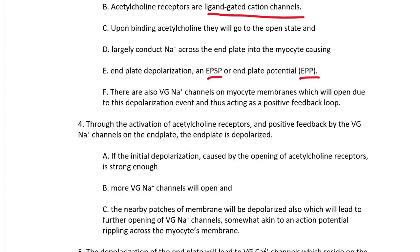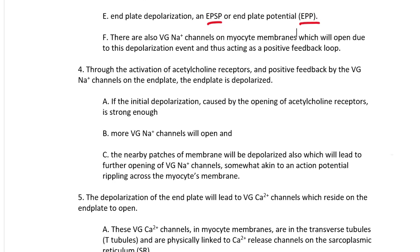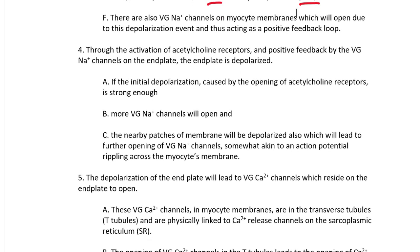Through activation of acetylcholine receptors and the positive feedback loop of voltage-gated sodium channels on the end plate, the end plate becomes depolarized. If the initial depolarization is strong enough, more voltage-gated sodium channels open and nearby patches of membrane also become depolarized, leading to further opening of voltage-gated sodium channels — akin to an action potential rippling across the myocyte membrane. This is a positive feedback loop: if enough acetylcholine is in the synaptic cleft and enough acetylcholine receptors open, sodium crosses the myocyte membrane and the initial depolarization event occurs, causing more voltage-gated sodium channels to open.